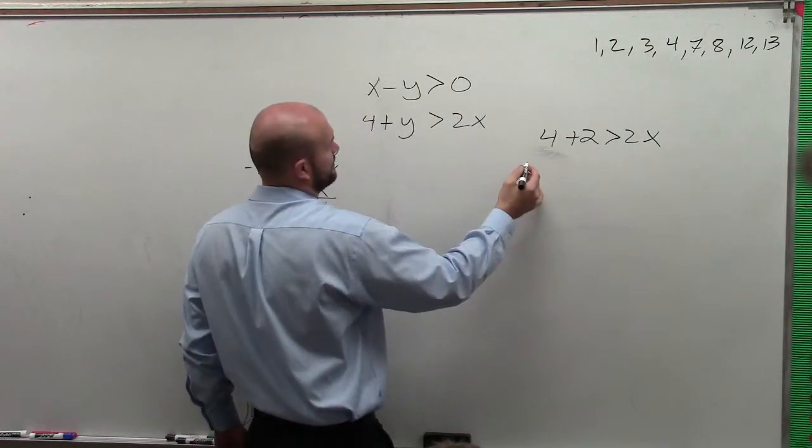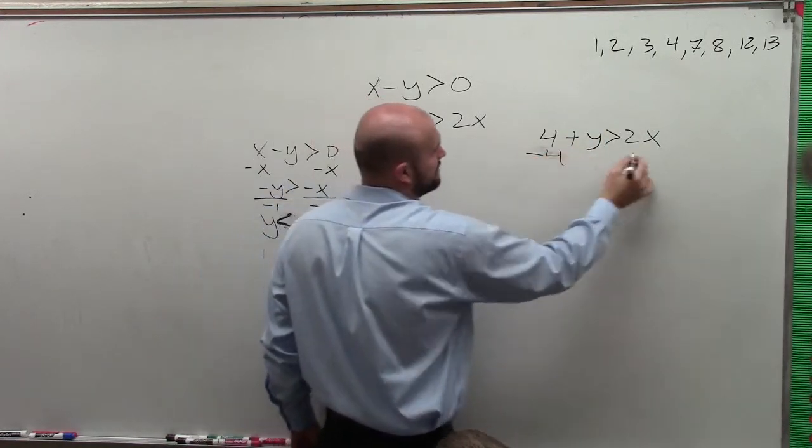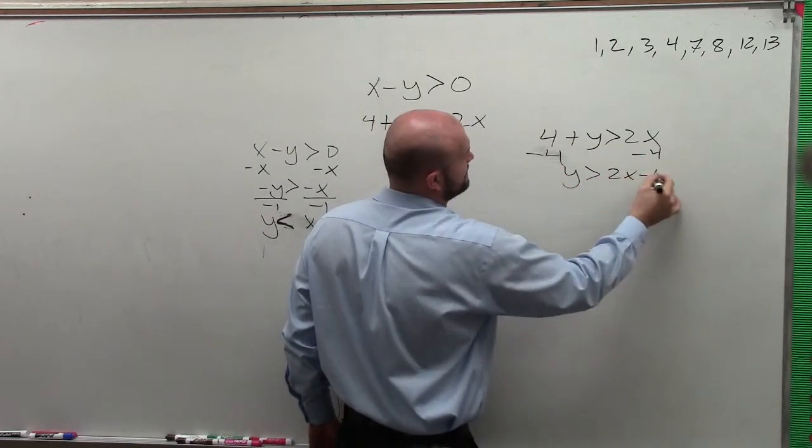Over here, we're solving for y, so I subtract 4 on both sides. So we have y is greater than 2x minus 4.